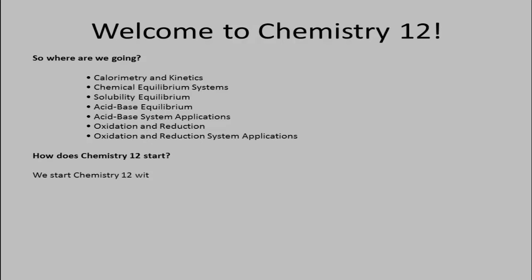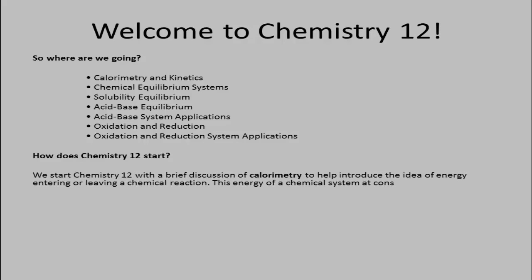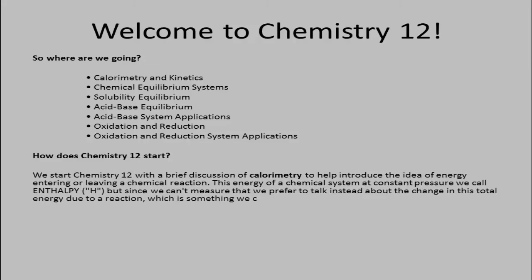So how does Chemistry 12 start? Well, we'll start with a brief discussion of calorimetry, and that will help introduce the idea of energy entering and leaving a chemical reaction. This energy of a chemical system at constant pressure we call enthalpy with a capital H, but since we can't measure that, we prefer to talk instead about the change in the total energy due to reaction, which is sometimes something we can measure, and that's called the delta H, or the change in enthalpy.